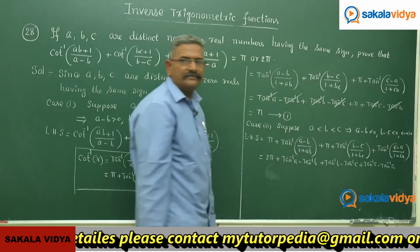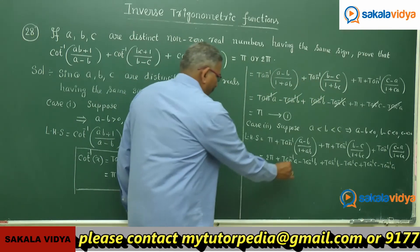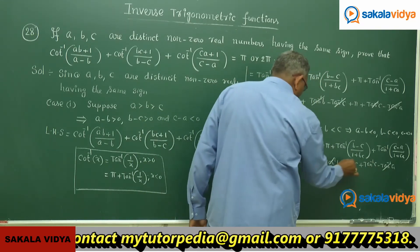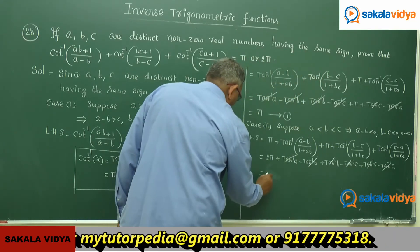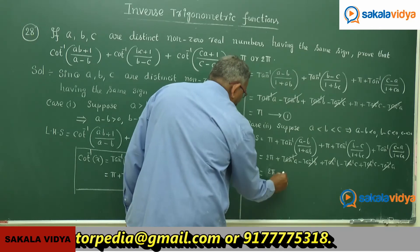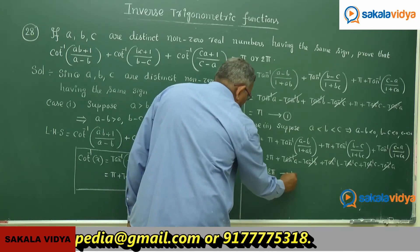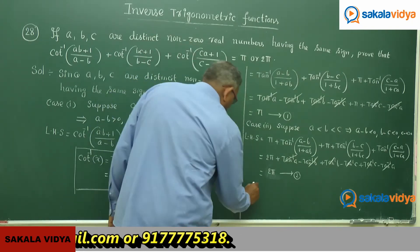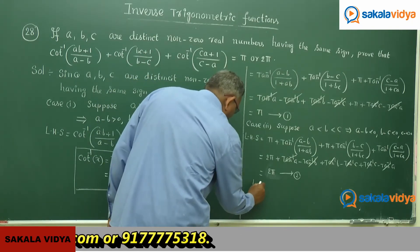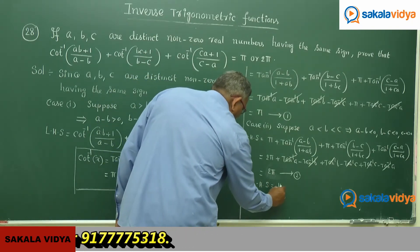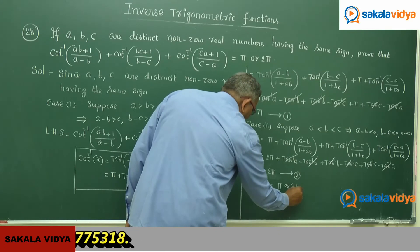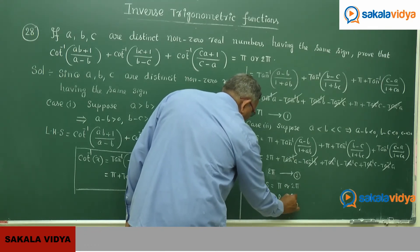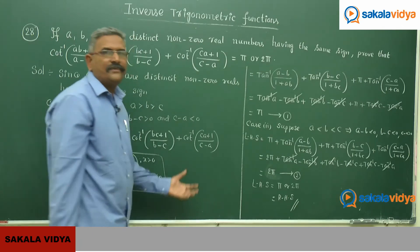Again applying the subtraction identity, tan inverse A − tan inverse B, tan inverse B − tan inverse C, and tan inverse C − tan inverse A all cancel, leaving 2π. Therefore the LHS equals π or 2π, which equals the RHS. Hence it has been proved.